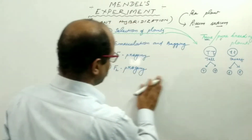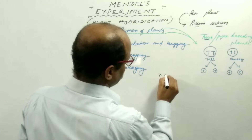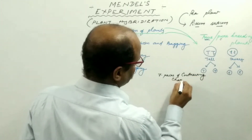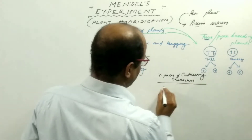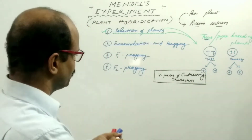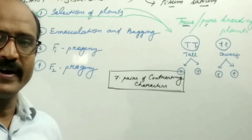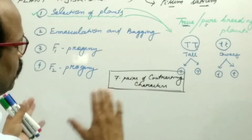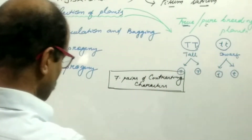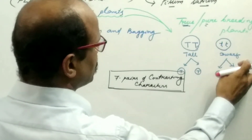Mendel selected seven pairs of contrasting characters. What is the meaning of contrasting character? Contrasting characters means opposite to each other. For example, if you consider the height of a plant — one is tall and another is dwarf. So these are contrasting characters, opposite to each other.